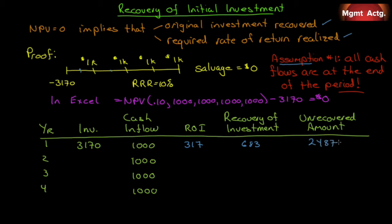At the beginning of year two, we have $2,487 invested. We need to achieve a 10% return on that. That is, rounded off, $249, which means out of the $1,000 cash flow, $751 is part of the return of our original investment. $2,487 minus $751, $1,736 left over. Beginning year three, we have $1,736. We need to make 10% on that. $173, which means $827 is our recovery of investment. So we still need to recover $909.